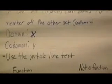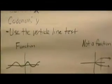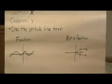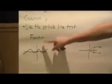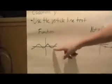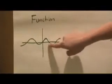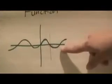To tell if a function is really a function, you have to use the vertical line test — or it's one way you can tell. In this function, a vertical line can only cross the function at one point, right there. That means that it is a function.